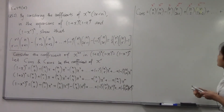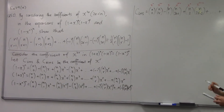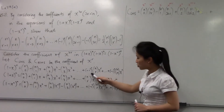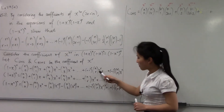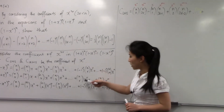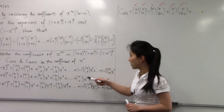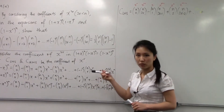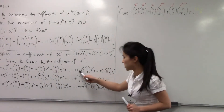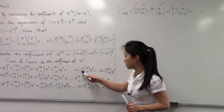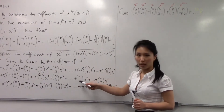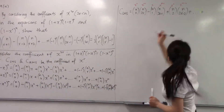Now let's continue. We can see that the middle term has x to the power of r multiplied by x to the power of r, so when we multiply them we get x to the power of 2r. Hence, the coefficient must equal minus 1 to the power of r, times n choose r, multiplied by n choose r.